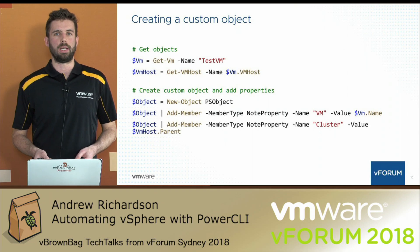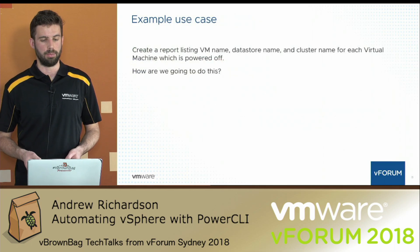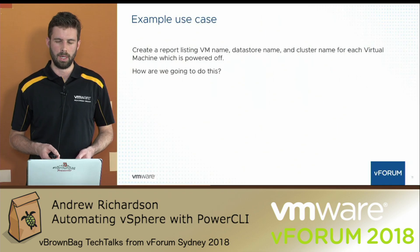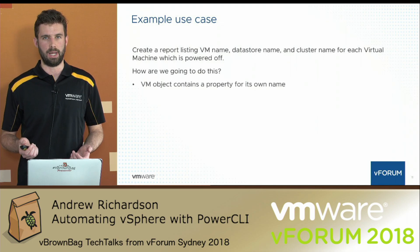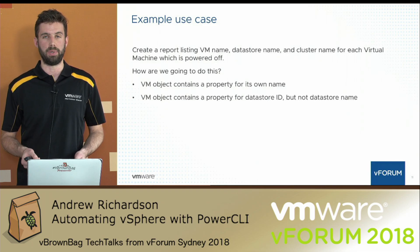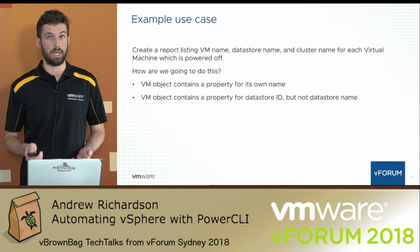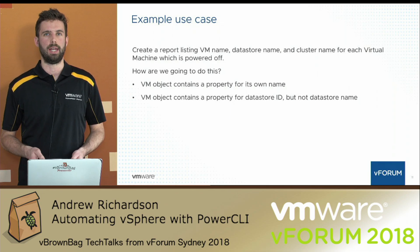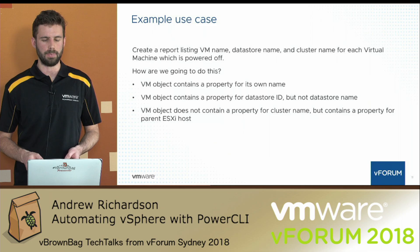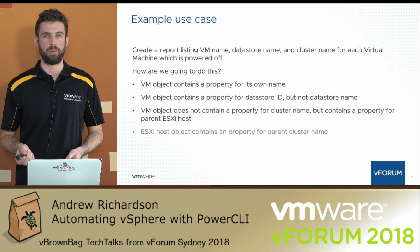With that technique, let's look at an example use case. Let's say our boss says: can you create a report listing the VM name, the data store name, and the cluster name for each virtual machine in our environment that is powered off? We know that each VM object contains a property for its name — that's easy. However, a VM object does not contain a property for its data store name, though it does contain a property for data store ID. A VM object also does not contain a property for cluster name, but it does contain a property for the parent ESXi host, and then the ESXi host object contains a property for the parent cluster name.